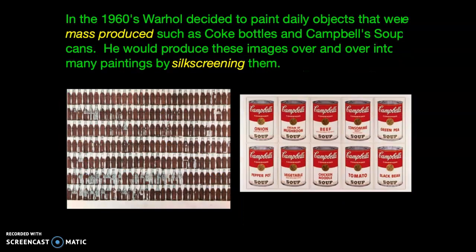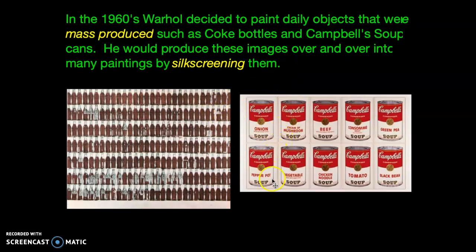So he started to paint objects he'd seen in daily life — mass-produced objects, things made by machine that can be produced in many hundreds of thousands, such as Coca-Cola and Campbell's soup. He used a technique called silk screening to make these paintings of Coca-Cola and Campbell's soup.